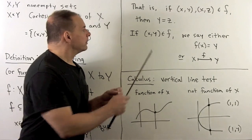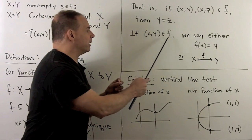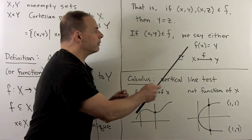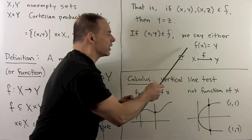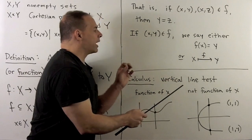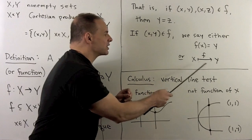Now, for notation, if we have x comma y as an element of f, we would say either f of x is equal to y, so that's more familiar, or I could write f assigns x to y.